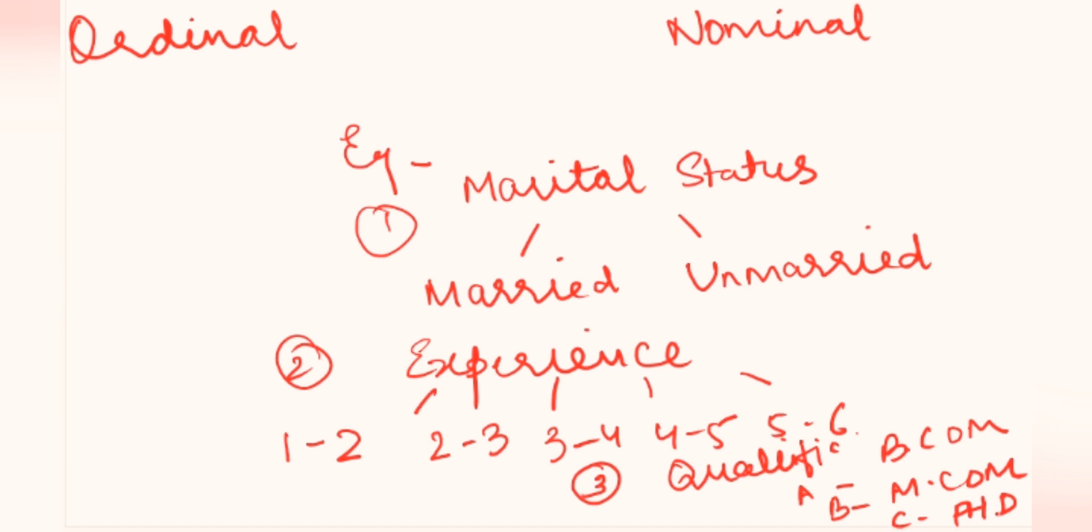Now when we talk about marital status, which is married or unmarried, people will take either married or unmarried, so this is called binary. When we come to experience, it has so many options, so it falls under MCQs. If we check the qualification BCom, MCom, PhD, it also falls under MCQs. Now the question is how to identify which one is ordinal or which one is nominal. This marital status, either married or unmarried, no other inferences, there is nothing we can come out with, so it is nominal.